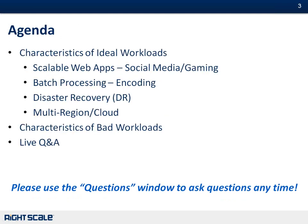Thanks. So our agenda for today: first, we're going to talk about the characteristics of an ideal workload. We picked four special use cases we see very often working with customers. The first is scalable web apps, specifically social media and gaming. Next is batch processing — things like encoding or heavy batch calculations like gene sequencing. Then disaster recovery. And last but not least, multi-region, multi-cloud type deployments. We'll also talk about workloads that are not always the best fit for the cloud and what you can do to work around that.